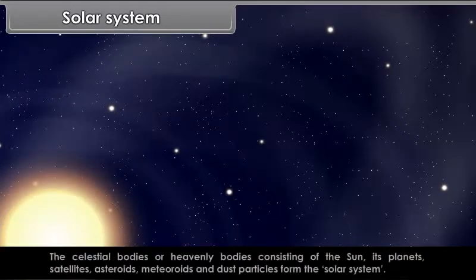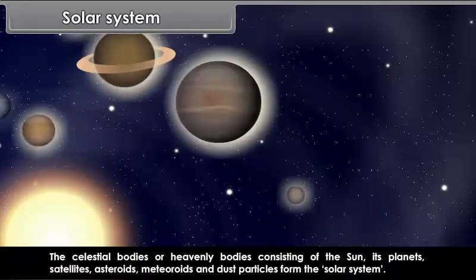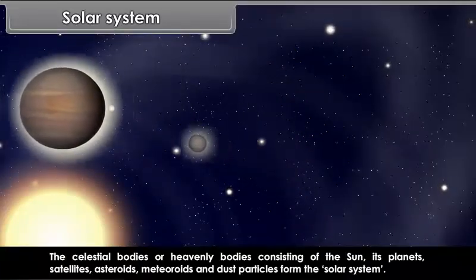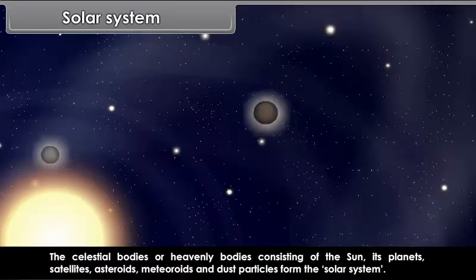The celestial bodies or heavenly bodies consisting of the sun, its planets, satellites, asteroids, meteoroids and dust particles form the solar system.